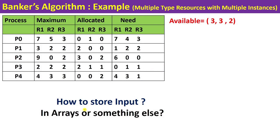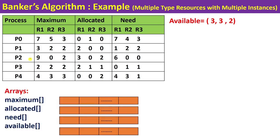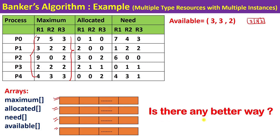Now the first question is how to store the user's input in the program. We could use separate 2D arrays for maximum, allocated, need, and a 1D array for available. However, a better and more readable way is to use an array of structures, grouping all information for each process together.